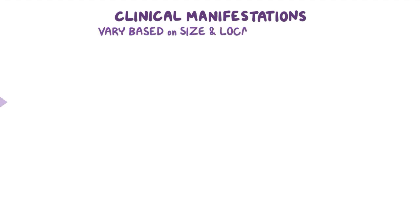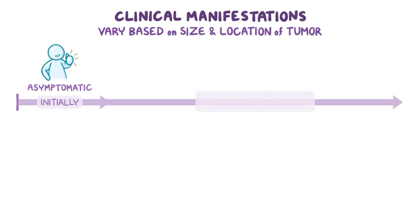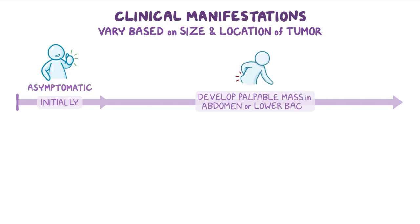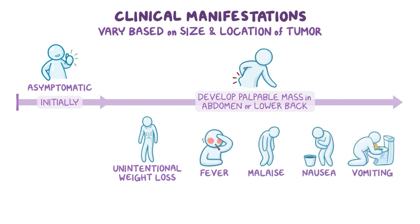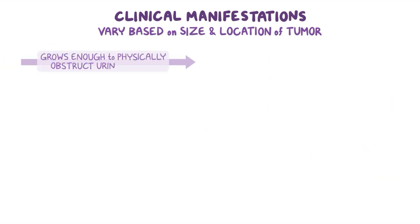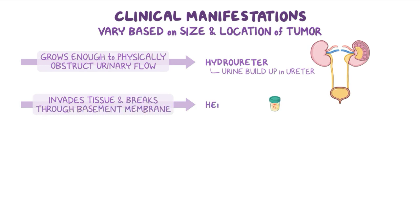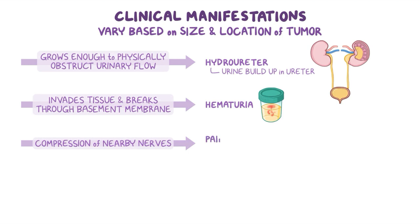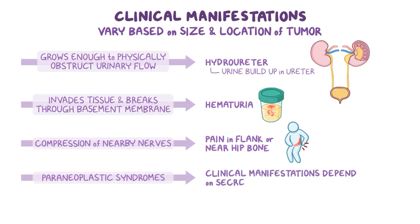The clinical manifestations of renal cancer vary based on the size and location of the tumor. Initially, clients are typically asymptomatic. As the disease progresses, clients may develop a palpable mass in the abdomen or lower back and can experience unintentional weight loss, fever, malaise, nausea, and vomiting. If the tumor grows enough to obstruct urinary flow, it can cause urine to build up inside the ureter, called hydroureter. As the tumor invades tissue and breaks through the basement membrane, clients can experience hematuria, while compression of nearby nerves can cause pain in the flank or near the hip bone. With paraneoplastic syndromes, clinical manifestations depend on the secreted hormones.